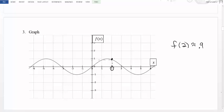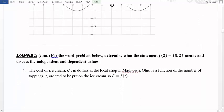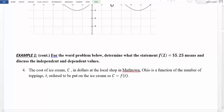Finally, if we consider what's happening in a word problem or a description, we might need some extra information. So here, for this particular word problem, we want to determine what the statement f(2) = 5.25 means and discuss the independent and dependent values. Again, we're talking about the cost of ice cream, C, in dollars at the local shop in Mathtown, Ohio, which is a function of the number of toppings, t, ordered to be put on the ice cream.